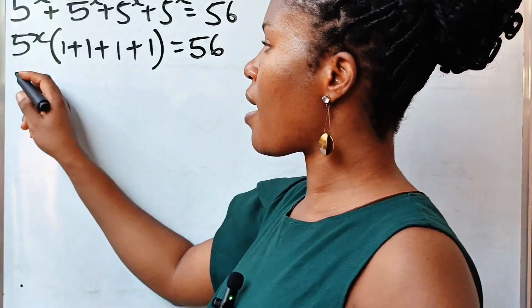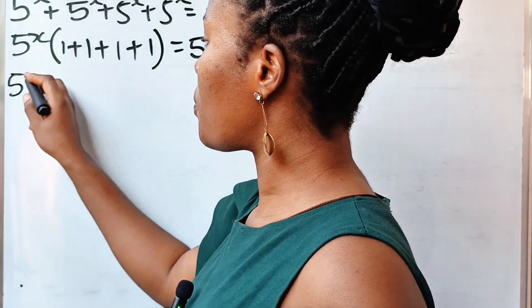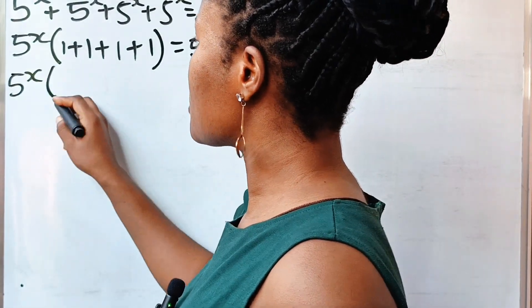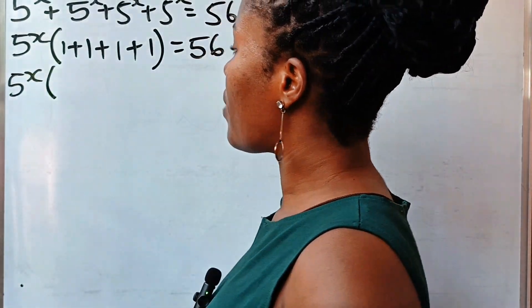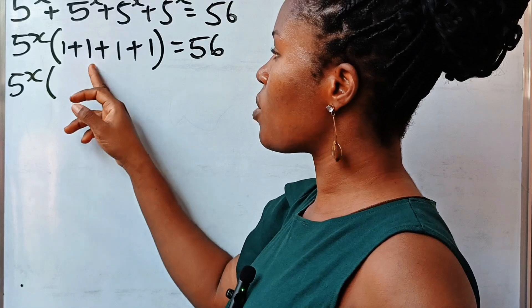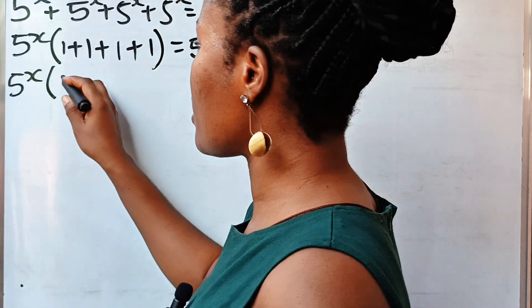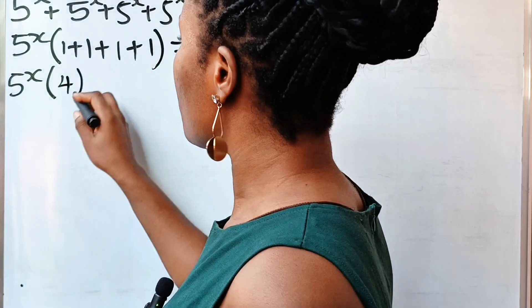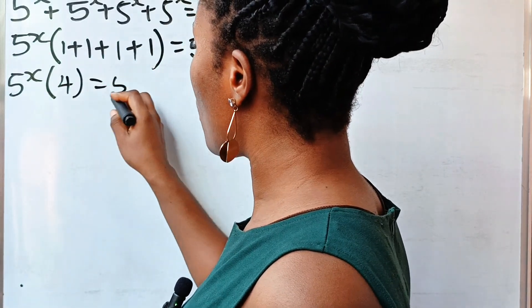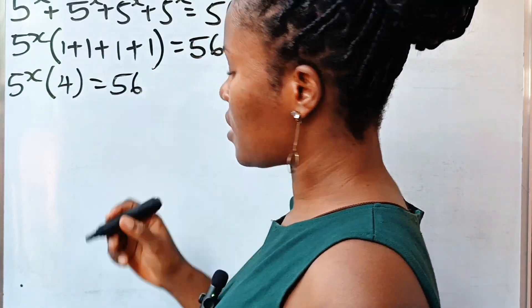Now we have 5 to the power of x, multiplied by 1 plus 1 plus 1 plus 1, which gives us 4. Is equal to 56.